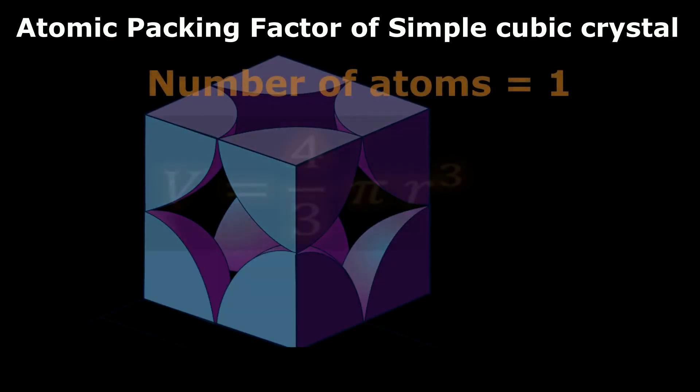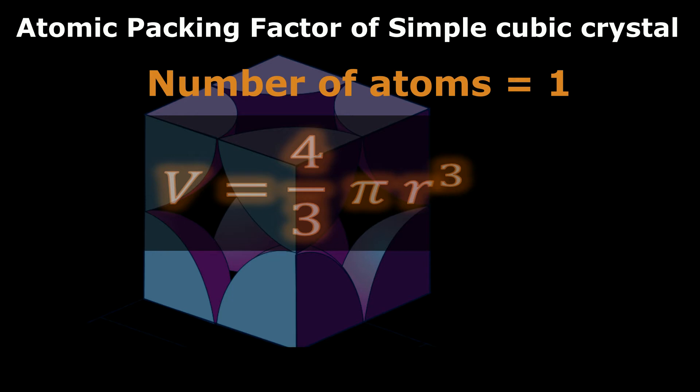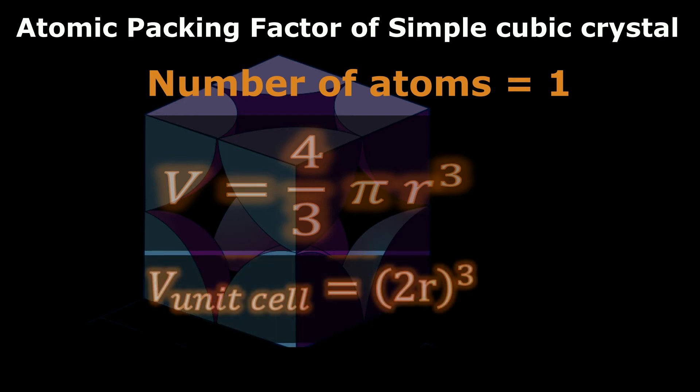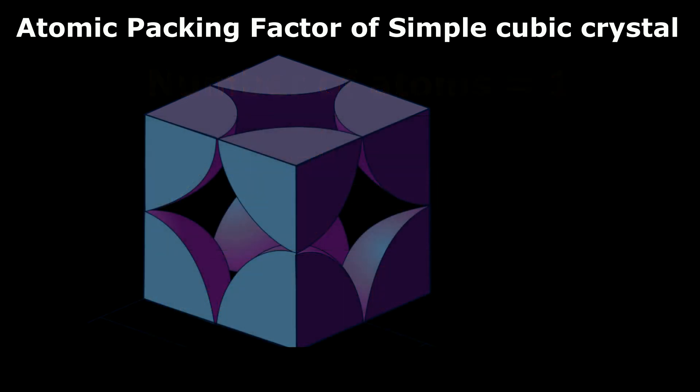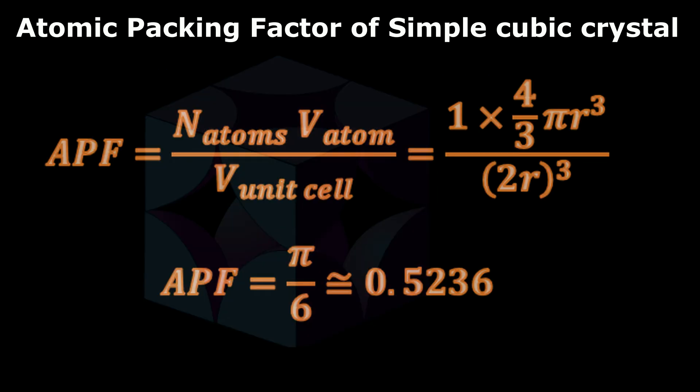Now substituting the values for number of atoms, volume of atom, and volume of unit cell and solving, we will get the atomic packing factor equal to pi by 6, which is nearly equal to 0.5236. So the atomic packing factor for a simple cubic crystal structure is equal to 0.5236.